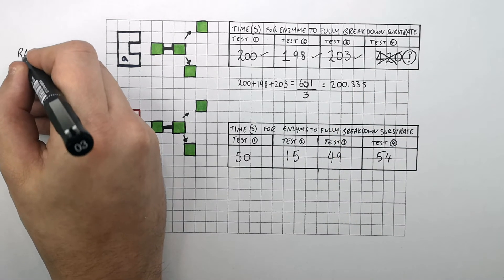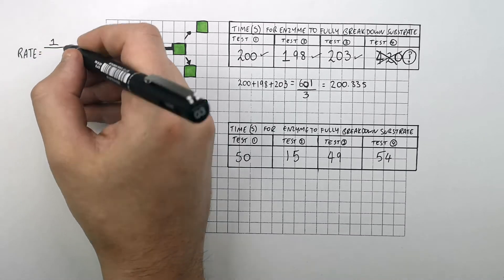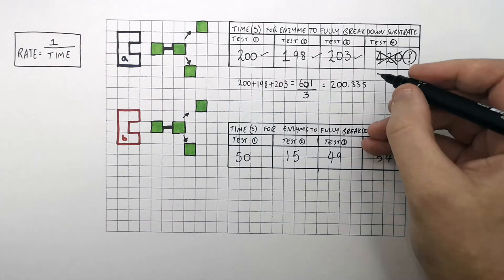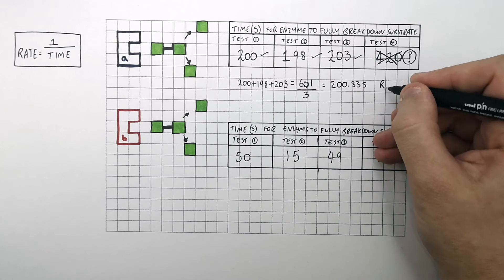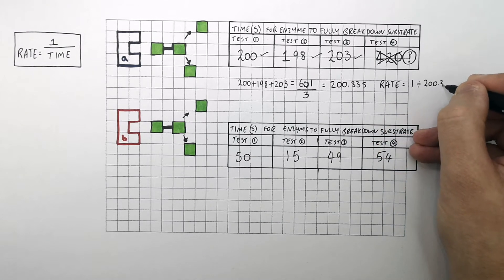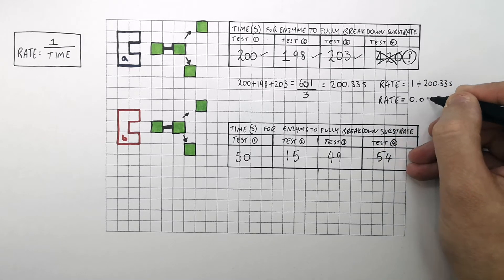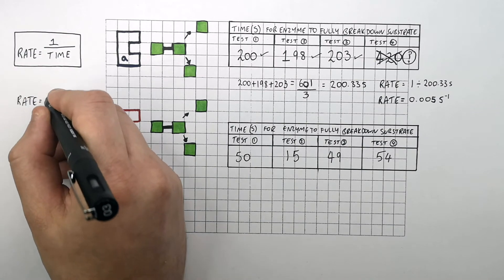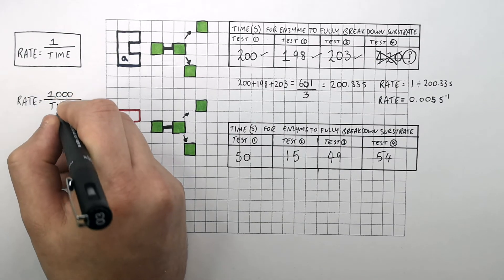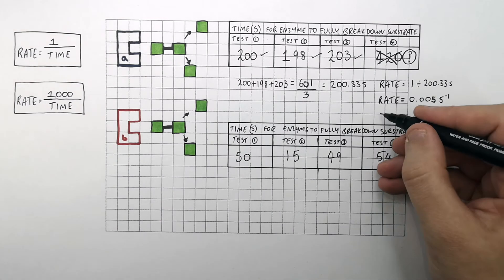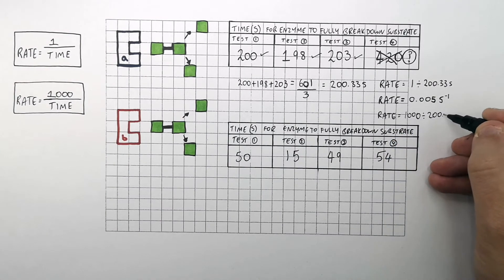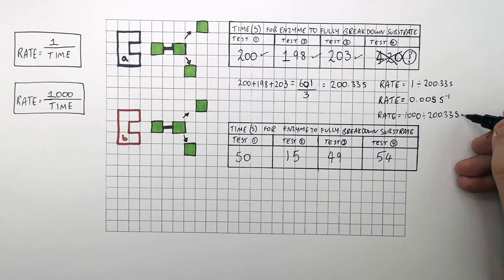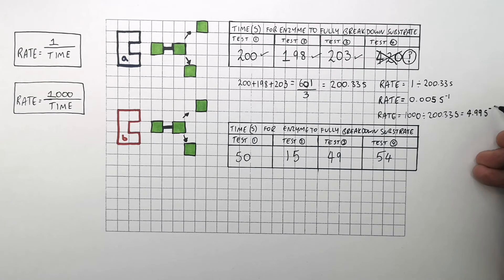To calculate the rate of reaction, you recall the equation: rate equals 1 over time. So to calculate the rate of this enzyme-controlled reaction, its rate equals 1 divided by 200.33 seconds, giving a rate of 0.005 seconds to the minus 1. You can also use the equation rate equals 1,000 over time: 1,000 divided by 200.33 seconds gives a rate of 4.99 seconds to the minus 1.